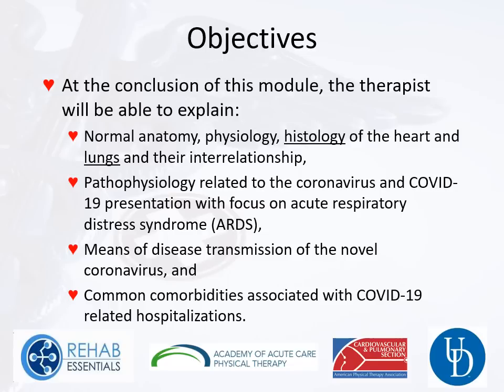The objectives: at the conclusion of this module, the therapist will be able to explain normal anatomy, physiology, and histology of the heart and lungs — histology of the lungs being the critical piece for COVID-19 — and their interrelationship. Also covered: pathophysiology related to the coronavirus and COVID-19 with focus on ARDS, means of disease transmission, and common comorbidities associated with COVID-19 related to hospitalizations.